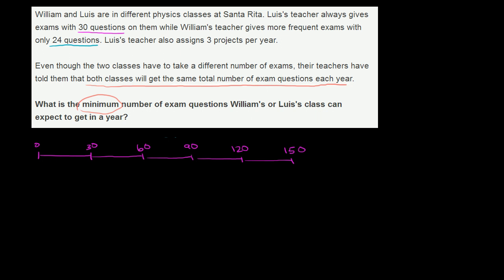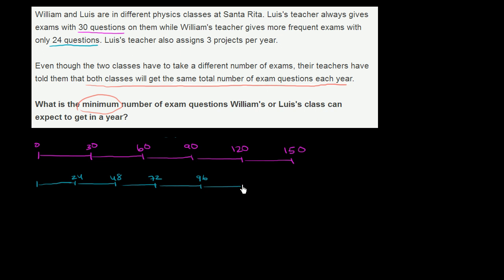What's going on with William? William's teacher: after the first test they're going to get to 24 questions, then 48 after the second test, then 72 after the third test, then 96 — I'm just taking multiples of 24 — 96 after the fourth test, then 120 after the fifth test. And if there's a sixth test, then they would get to 144. We could keep going on and on.